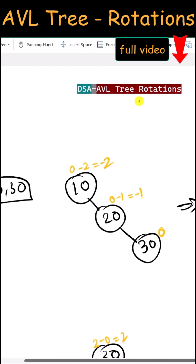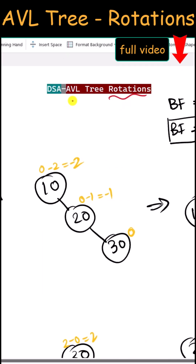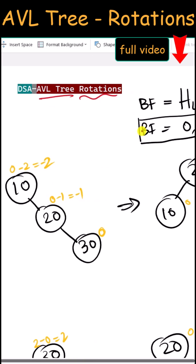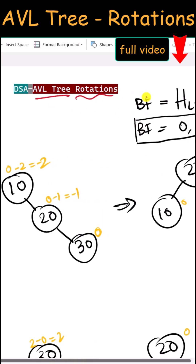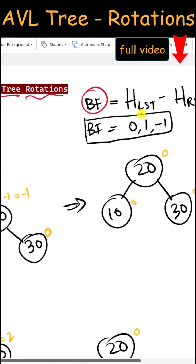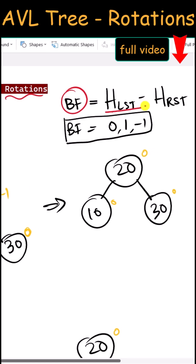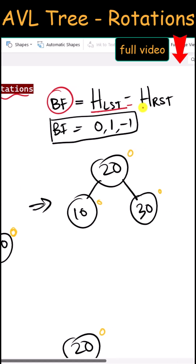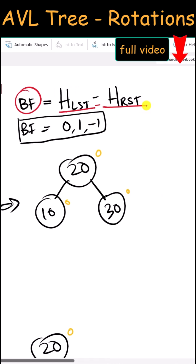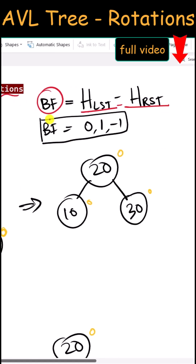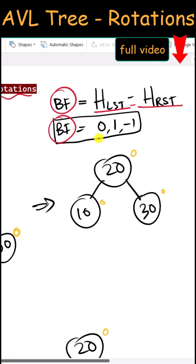Let's talk about different rotations in an AVL tree. The balance factor is the height of the left subtree minus the height of the right subtree. If the balance factor is 0, 1, or negative 1, then we can say that our tree is balanced.